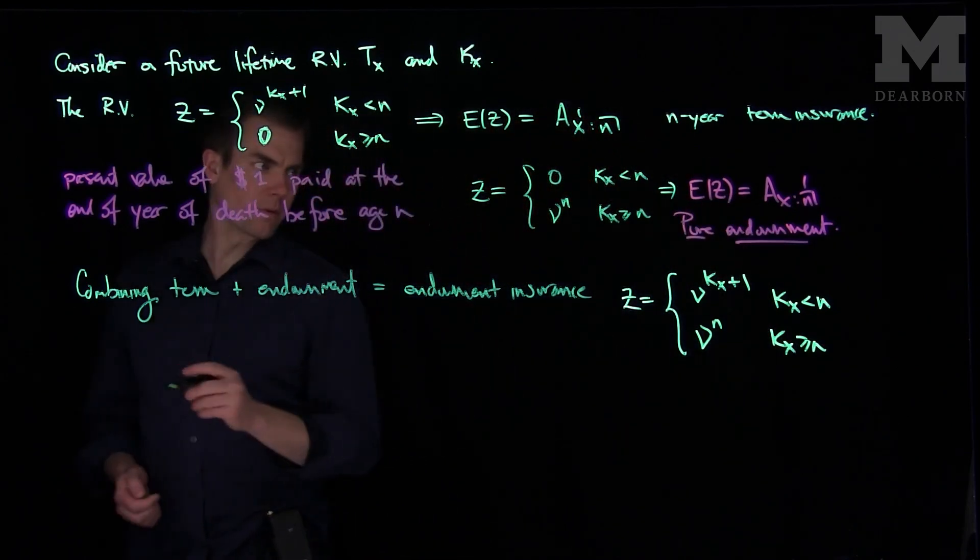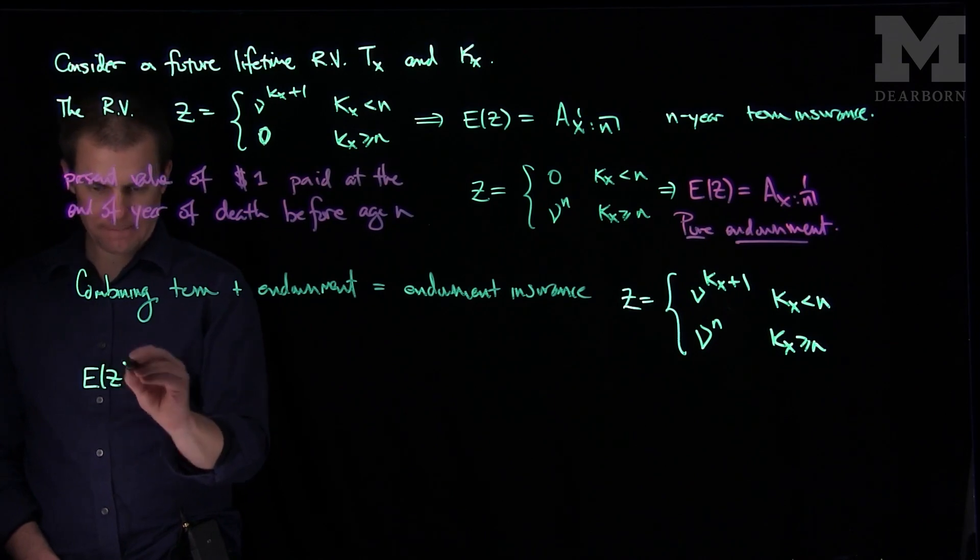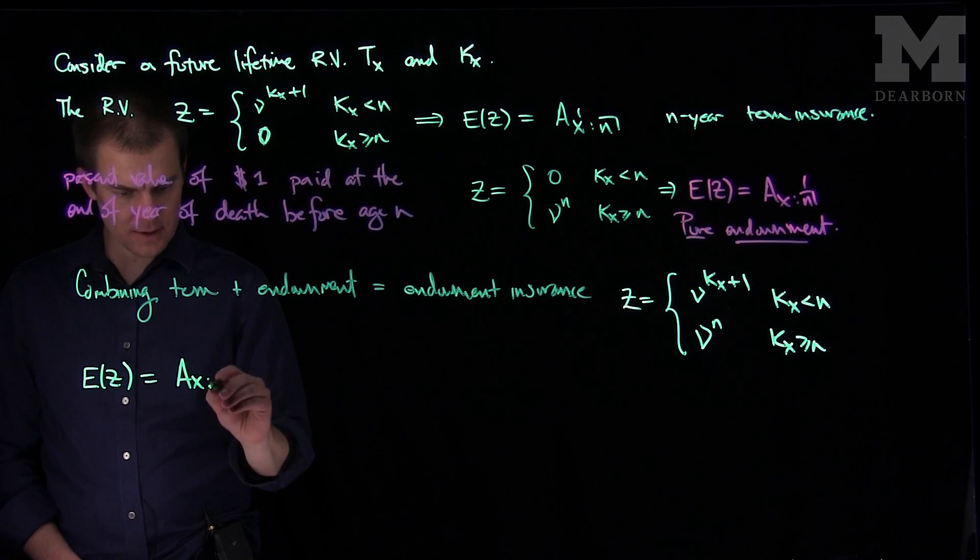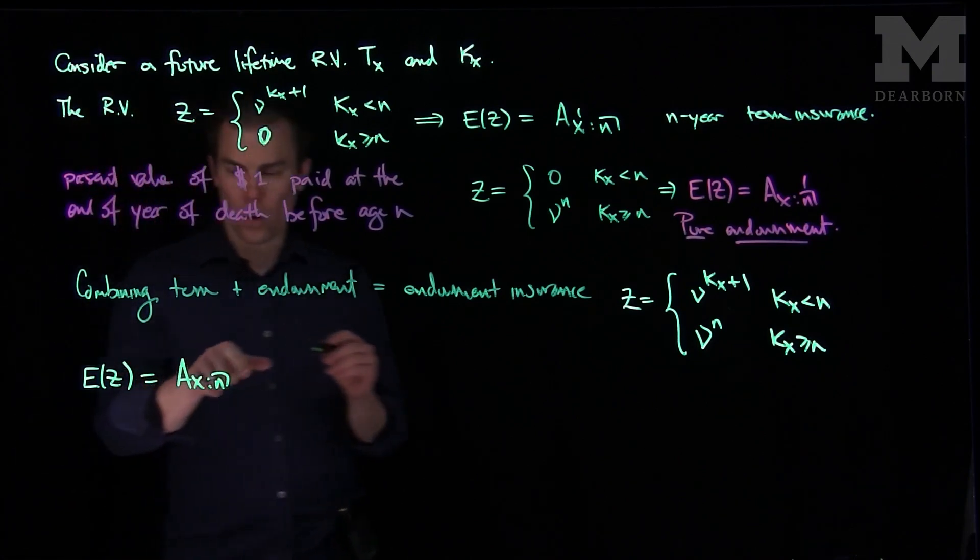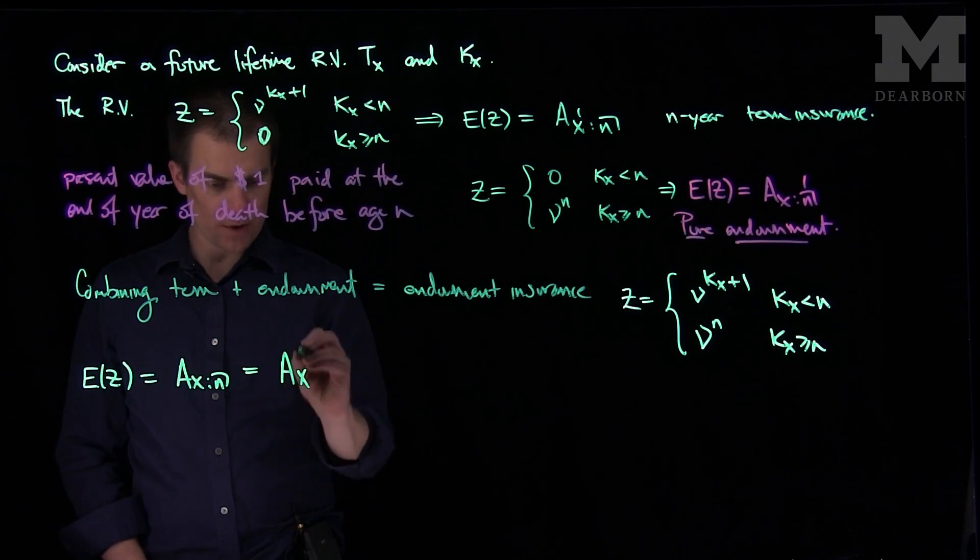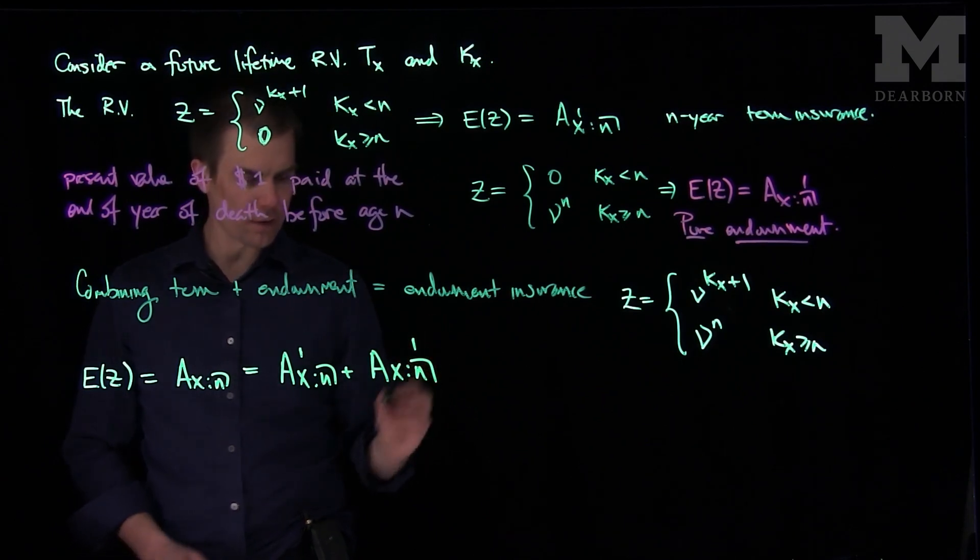And so for this random variable over here, the expected value of z is Ax:n with no 1 over either of them. But we can see that this present value is exactly equal to Ax:n with a 1 on top, the term insurance policy, plus the pure endowment policy, which is Ax:n with the 1 over here.